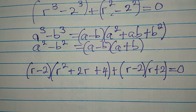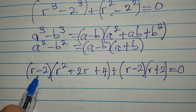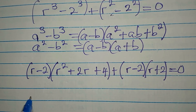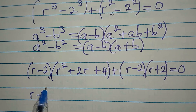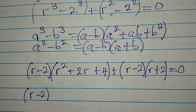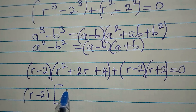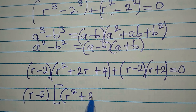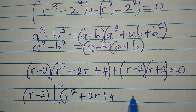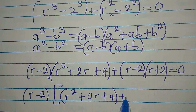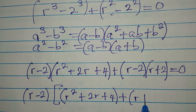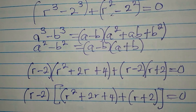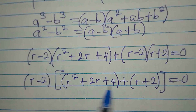Now we factorize because we have r minus 2 and r minus 2 — both are the same common factor. So we take out r minus 2, and inside we have r squared plus 2r plus 4, then plus r plus 2. Everything is equal to zero.